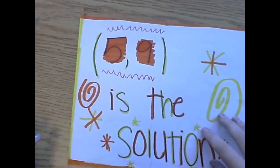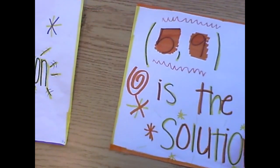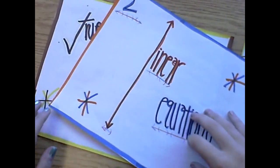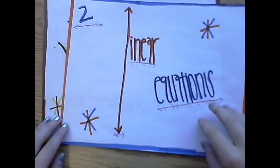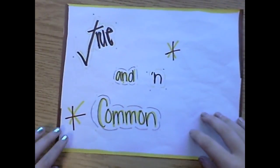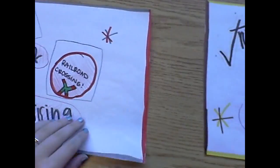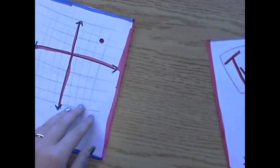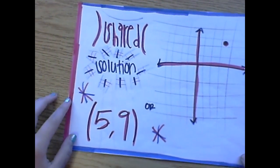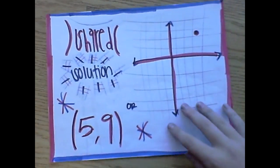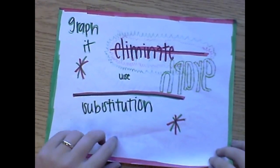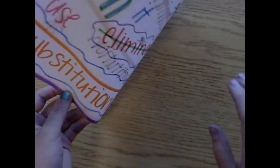Find the solution for the system — take two linear equations and solve what is both true and in common. Isolate the cross and the shared solution is a coordinate or ordered pair. To get a solution, graph, eliminate, or use substitution.